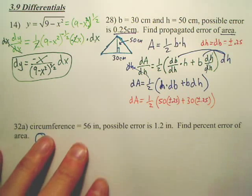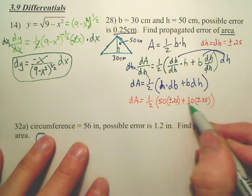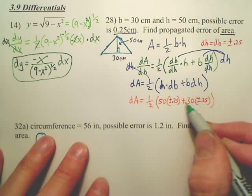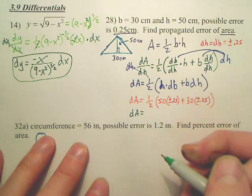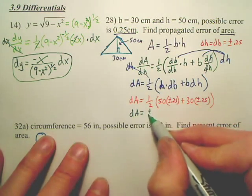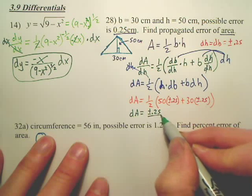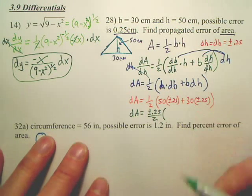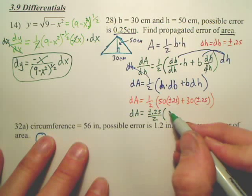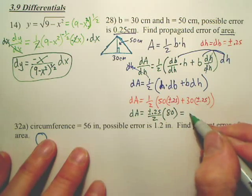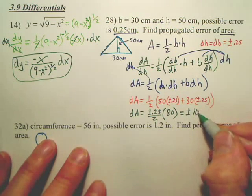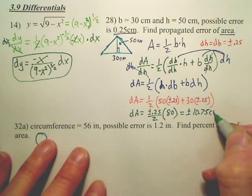When I do this, I end up, could I pull a GCF out? My dA is going to be plus or minus 0.25 over 2, and what's 50 plus 30? 80. When you solve that, you end up with positive or negative 10.75 centimeters.